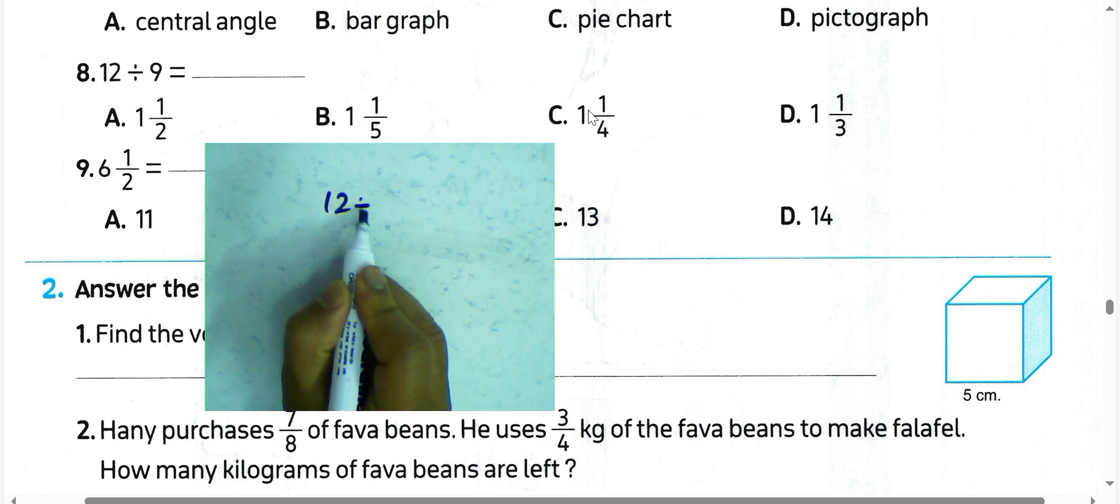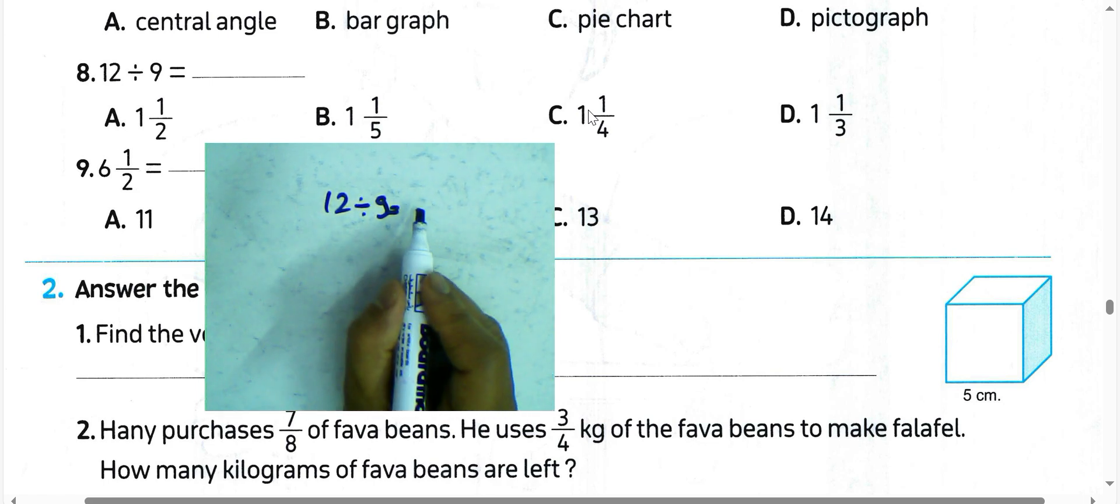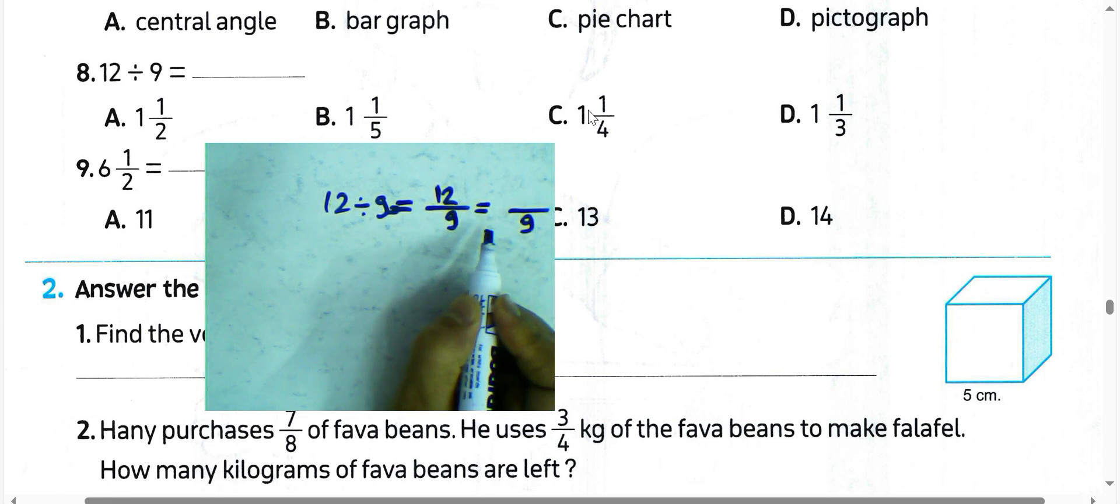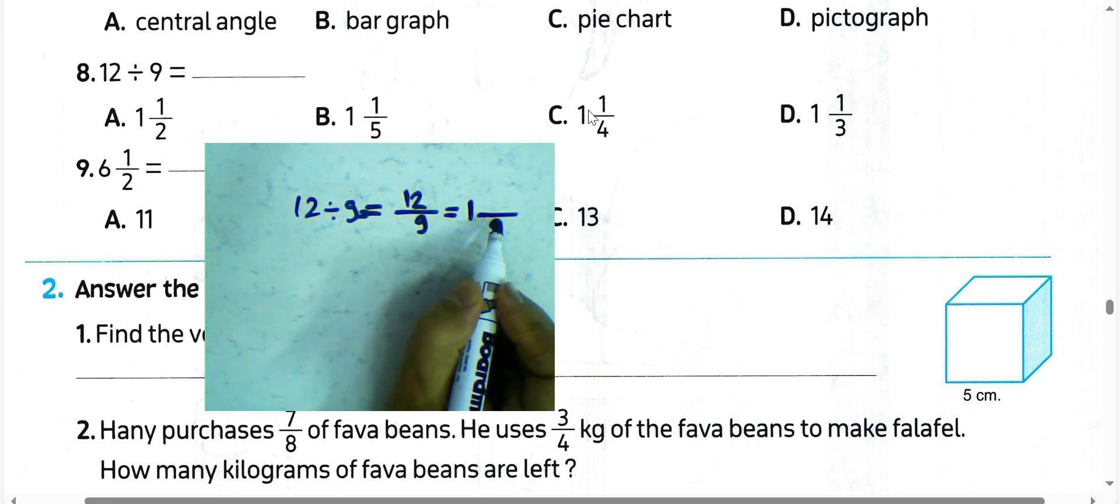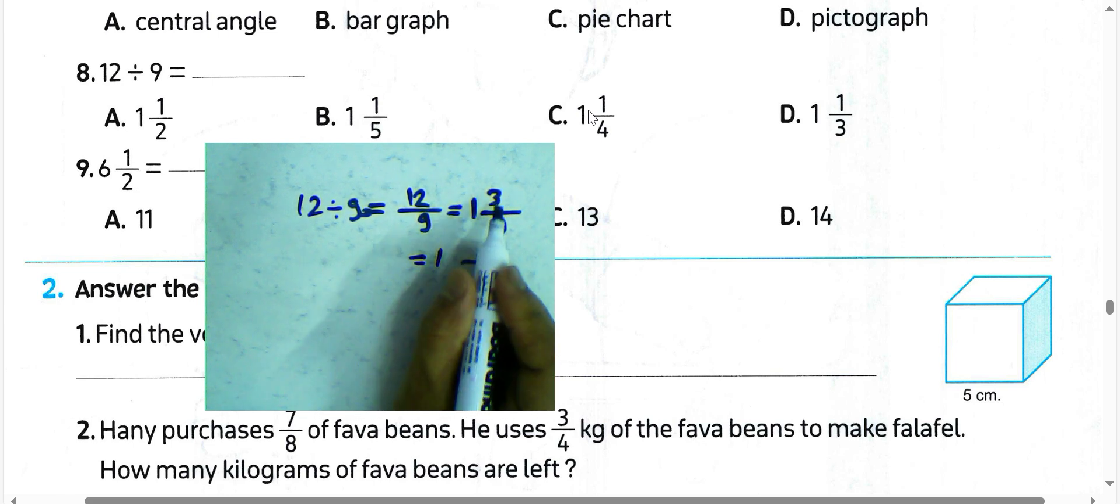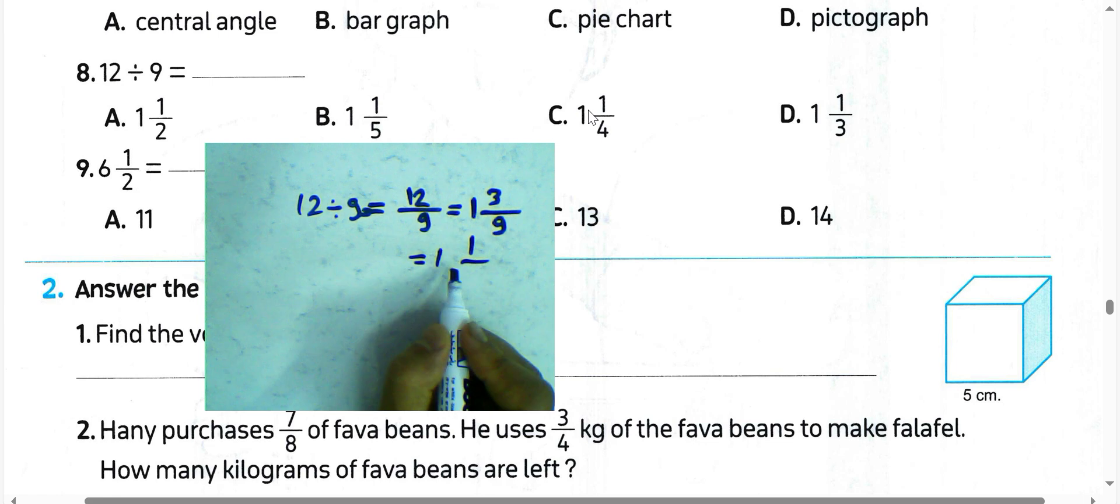12 divided by 9, we can write this as 12/9. 12 divided by 9 equals 1 and remainder 3, so 1 and 3/9. We can simplify by dividing by 3 in numerator and denominator: 3 divided by 3 is 1, 9 divided by 3 equals 3, then the result is 1 and 1/3.